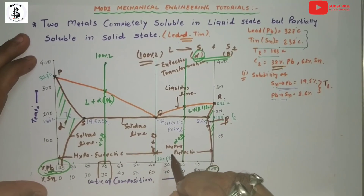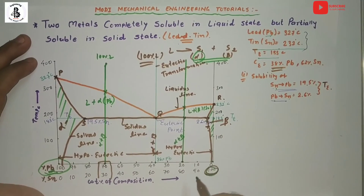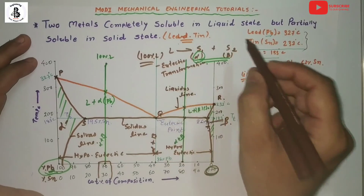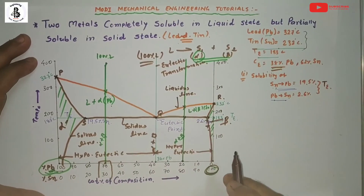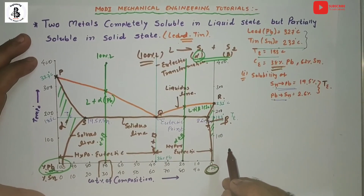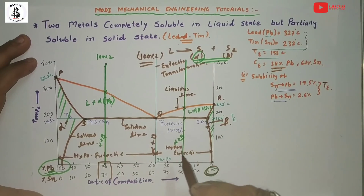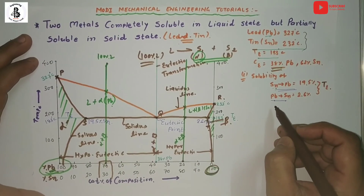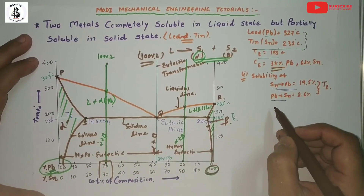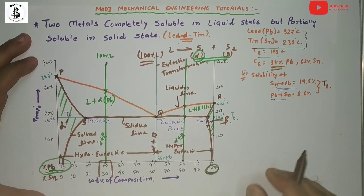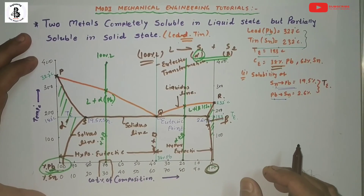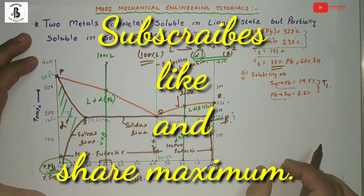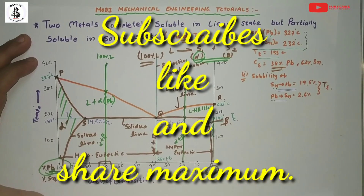So right now we have drawn the phase diagram for the lead-tin system, which has partial solubility in solid state according to the given conditions. I hope you understand this — if you like it, please subscribe and share more mechanical engineering tutorials. Thank you so much and keep watching.